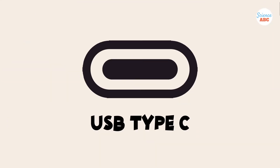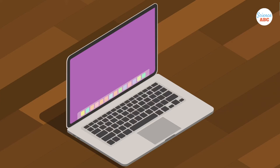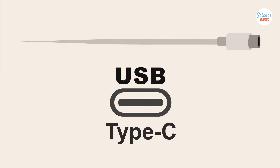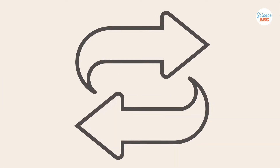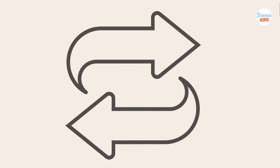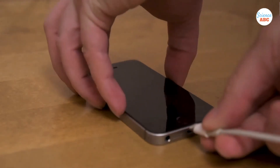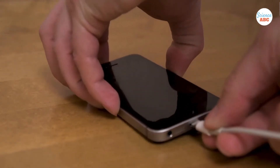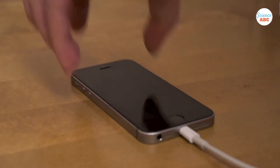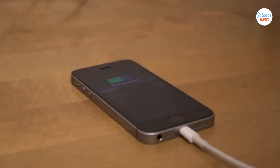Moreover, this third type is also rotationally symmetric, which means that users can plug in a USB Type C connector without worrying about which side is up or down. USB Type C also offers a bi-directional power feature, so not only can you charge your smartphone, but you can also use your smartphone to charge something else.